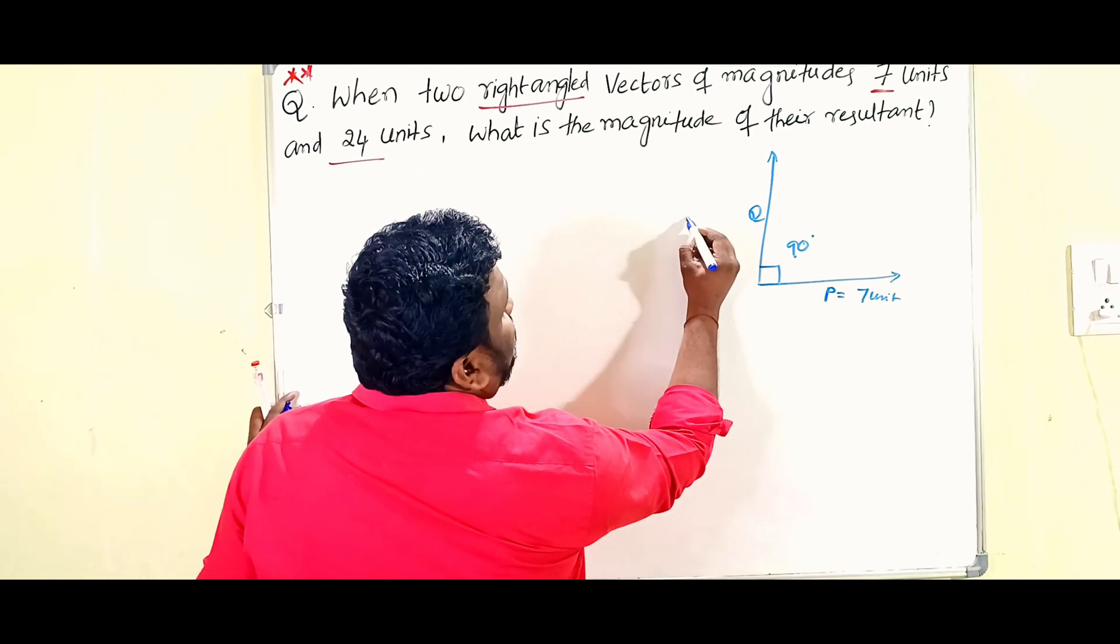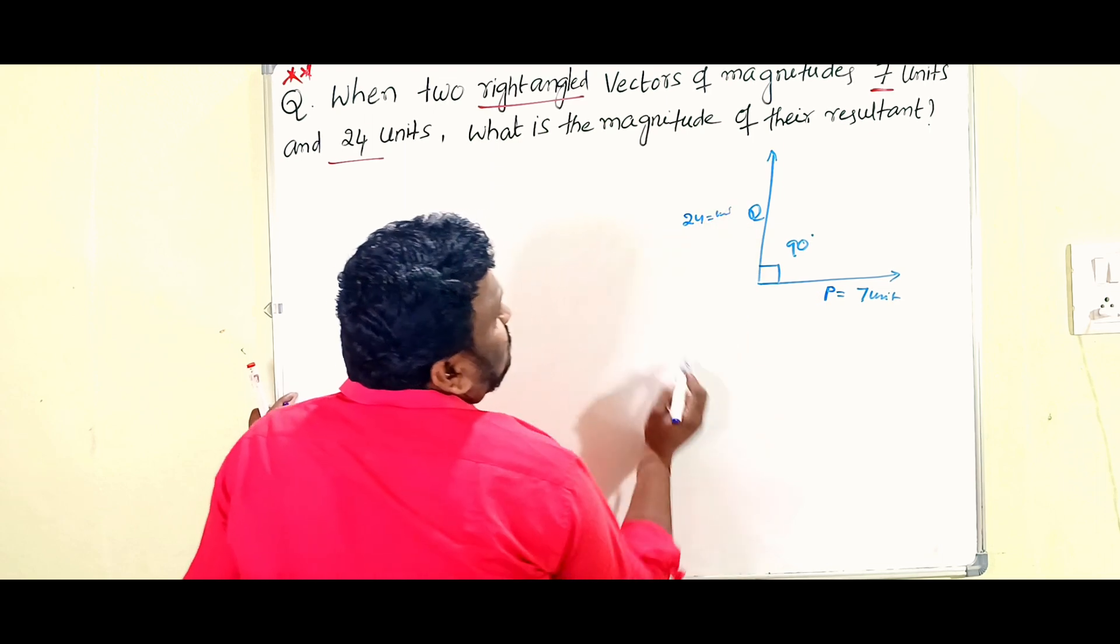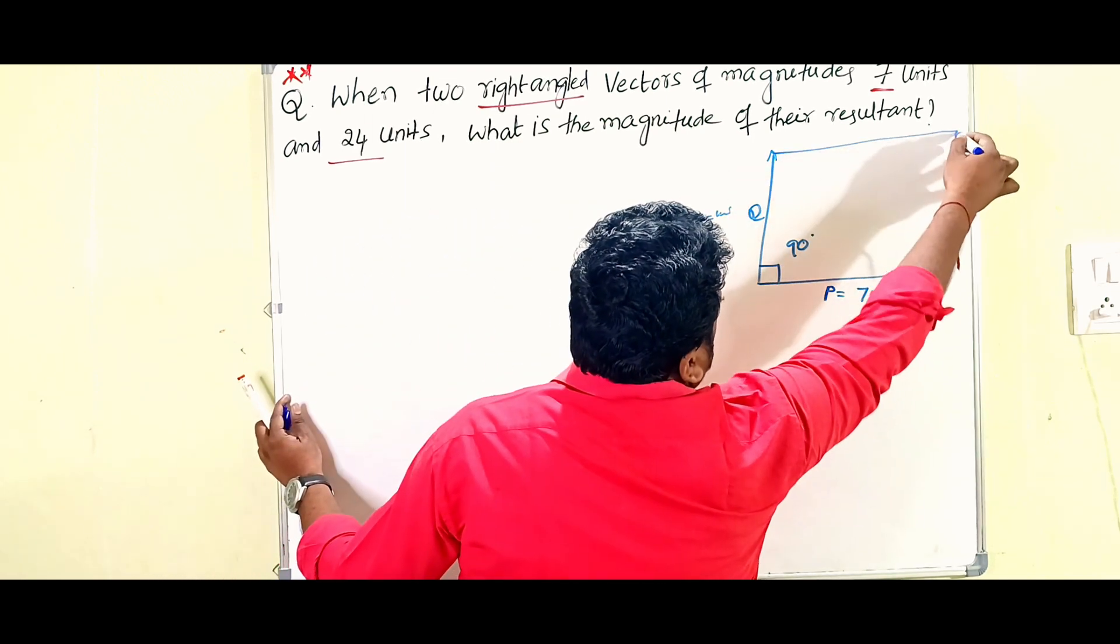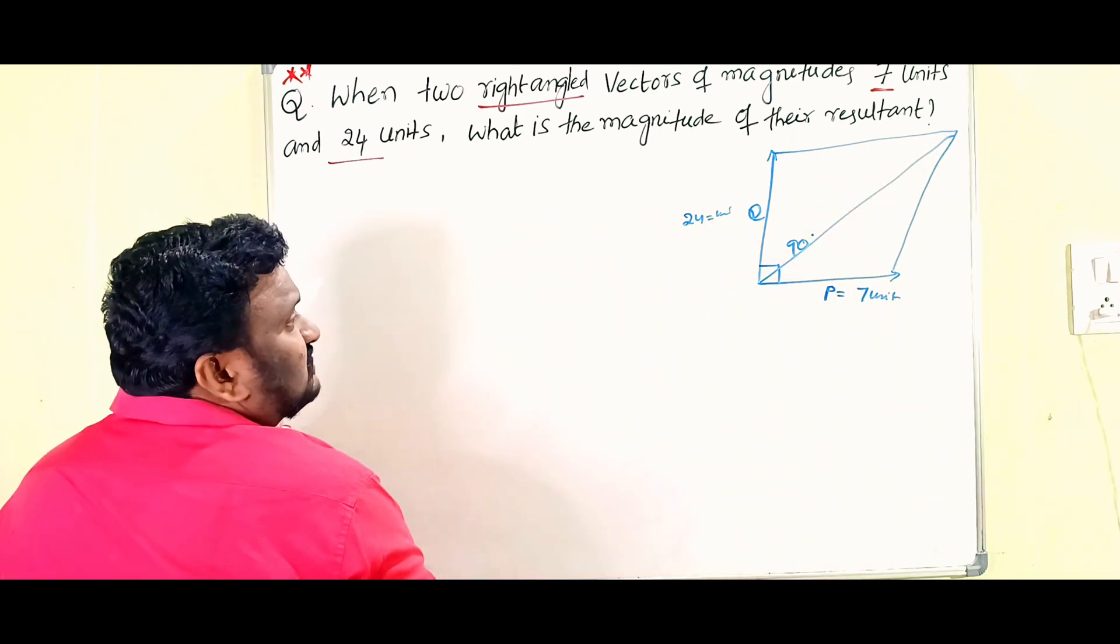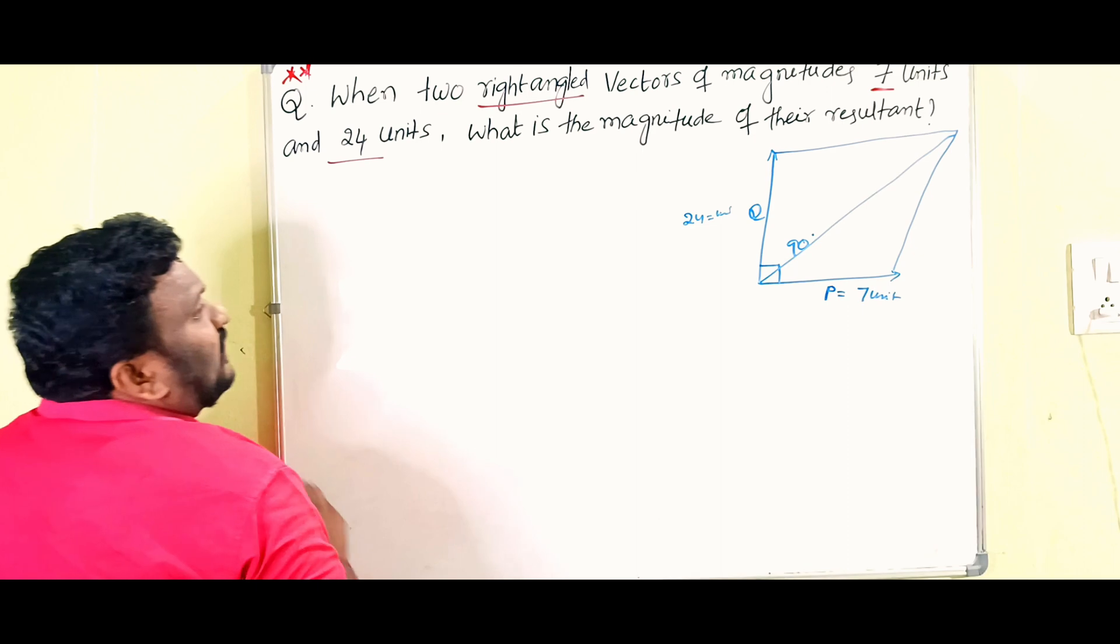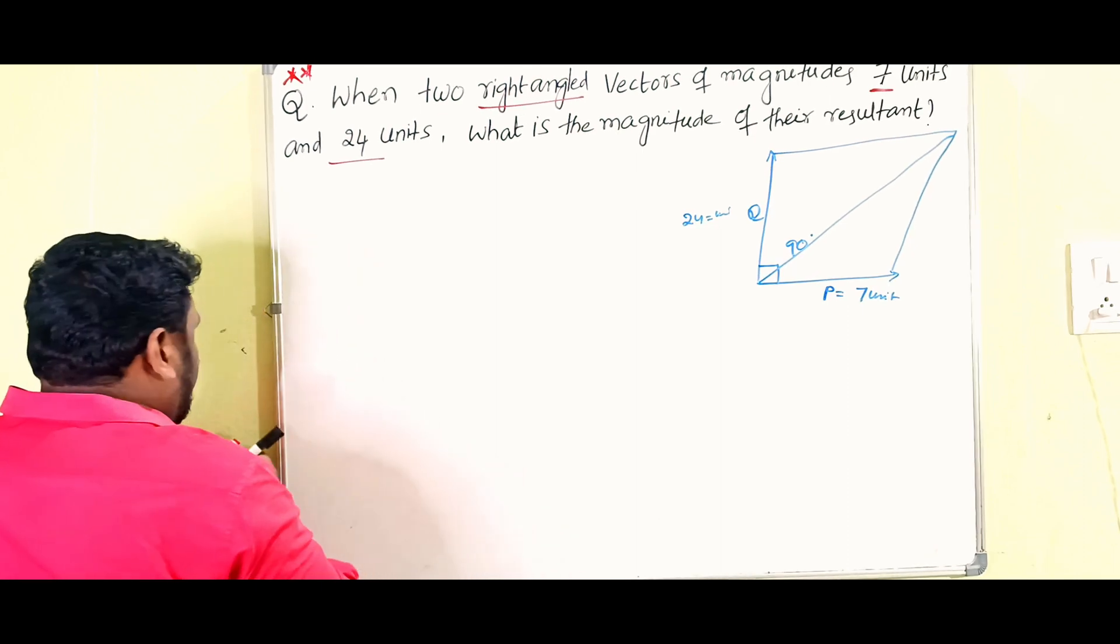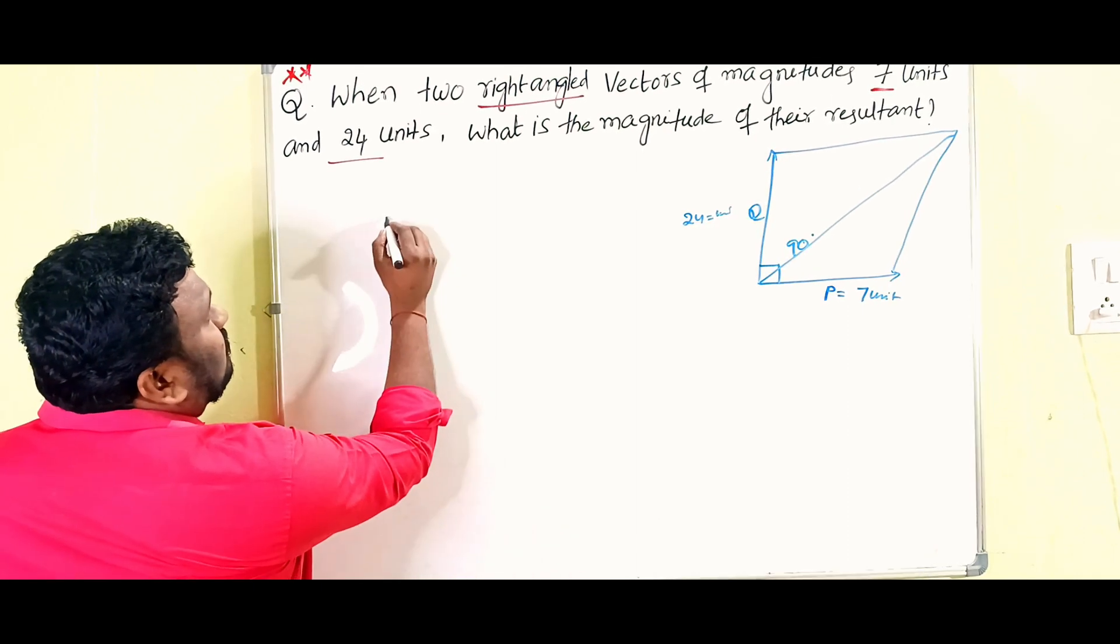And Q value is 24 units. So now what you have to find out: we have to find out the magnitude of those two vectors. That's why here simply we have parallelogram law of vectors.